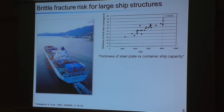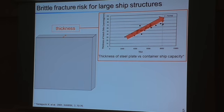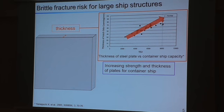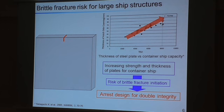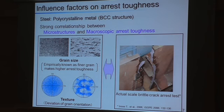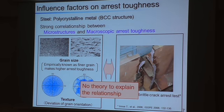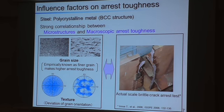Recently, strength and thickness of steel plates for container ships are increasing. Generally, the increase of thickness in steel makes the risk of brittle fracture higher, so not only prevention of brittle fracture initiation, but also crack propagation is essential as structural integrity. The application of steel with higher arrest toughness is directly effective to ensure the integrity, and it has been recognized that microstructures and macroscopic arrest toughness have a strong correlation.